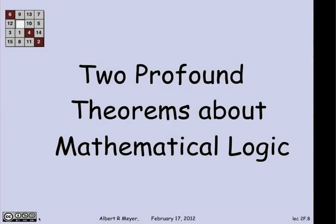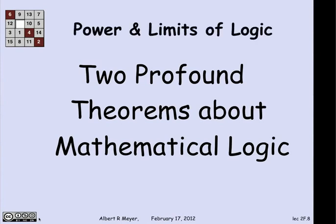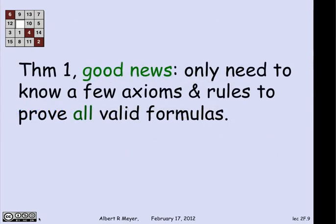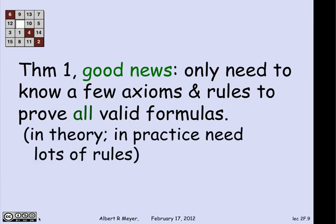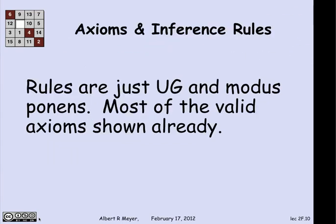We're going to shift to another topic: two profound theorems from mathematical logic about the properties of predicate calculus, describing the power and limits of logic. These are called meta theorems, because they're theorems about theorems — theorems about systems for proving theorems. The first theorem is a good news theorem. It says that if you want to prove every valid assertion of predicate calculus, there really are only a few axioms and rules that will do the job — namely modus ponens and universal generalization, and a few valid axioms we've already seen.